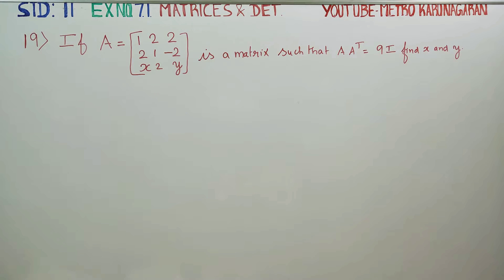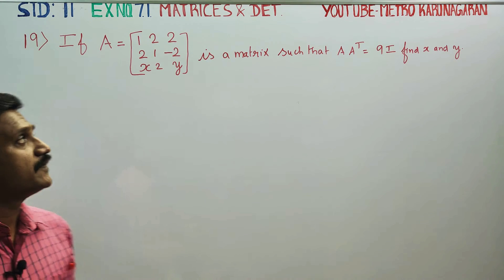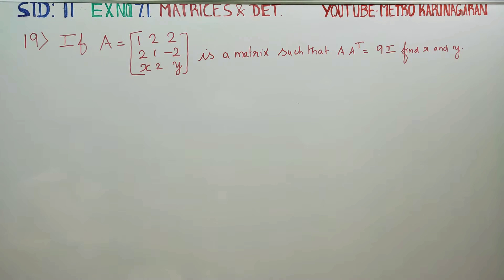Dear Level 11 Standard students, in exercise number 7.1, sum number 19, if A matrix is given and a condition is also given, find x and y.